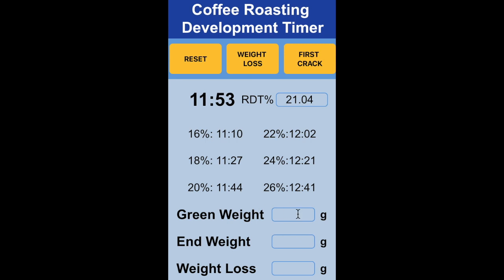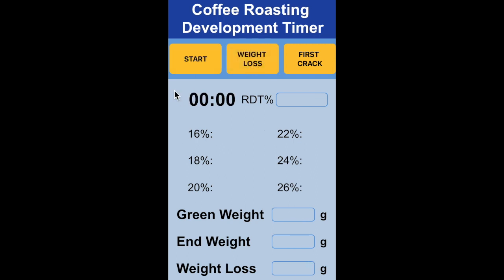The app will also calculate the weight loss for you. If your green weight was 150 grams and your end weight was 126 grams, you would get a weight loss of 16%. When you are finished, click Reset and it will reset everything.